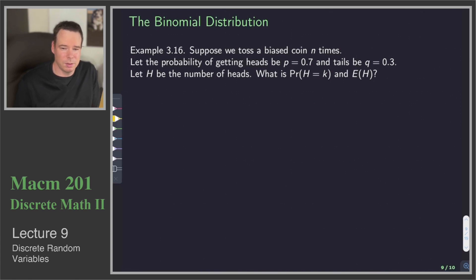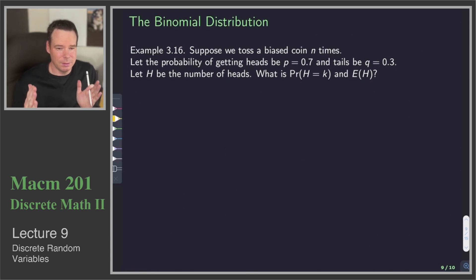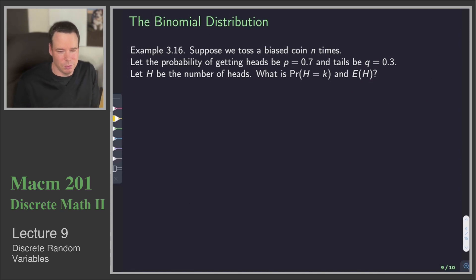Suppose we toss a biased coin — bias just means that heads are more likely to occur than tails. We toss a biased coin n times and we just want to know how many heads appear. We've got a fixed number of experiments, doing n experiments, and we want to know under that fixed sequence how many successes have occurred. We're considering a head to be a success.